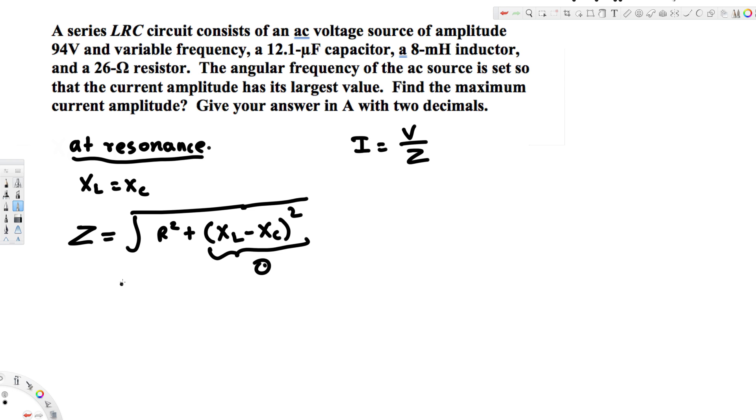We will get Z is equal to R. Therefore, this amplitude is going to be V over Z, which in our case is V over R.